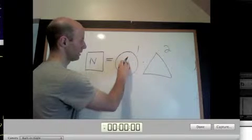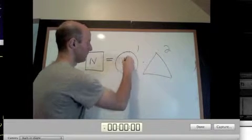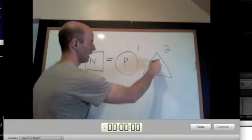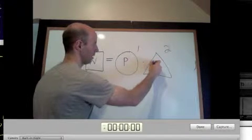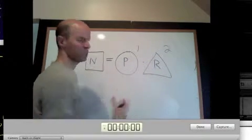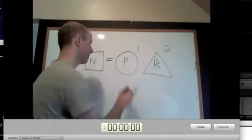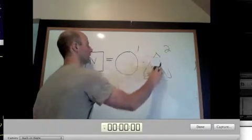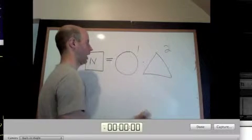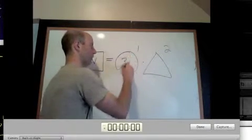So our natural number, which is a positive integer, is going to be equal to one prime times another prime. So let's just, for now, pick two prime numbers. They have to be different, two distinct prime numbers. For example, let's say we chose three and two.